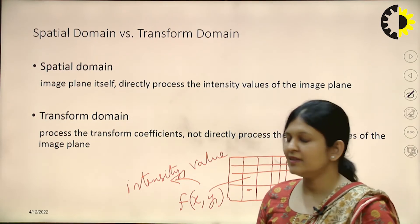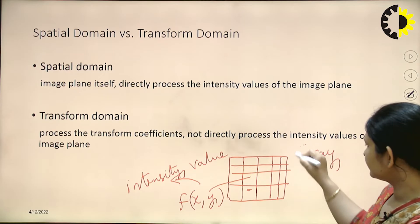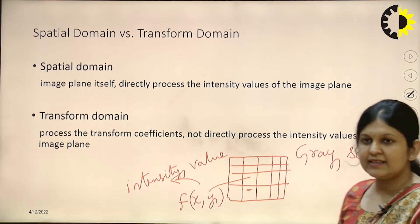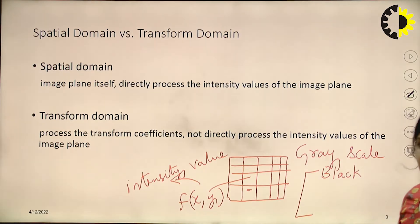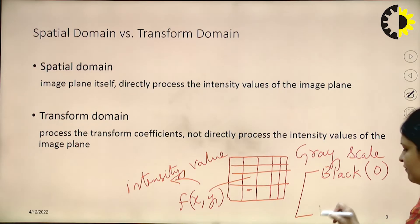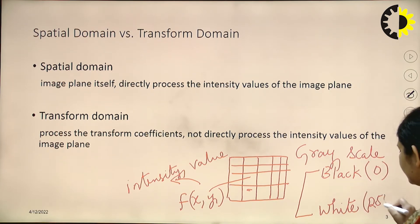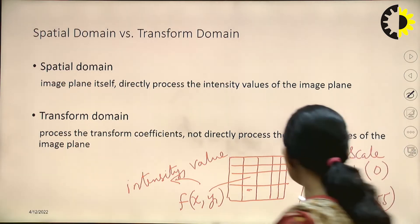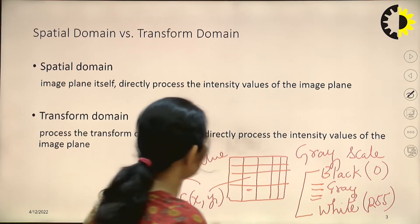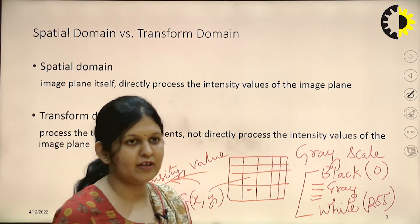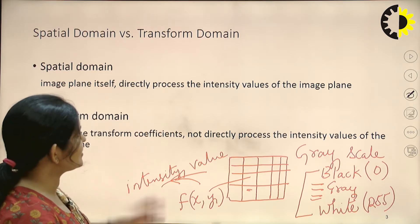Let's recall what is an intensity value. We work mostly in grayscale. Grayscale takes colors from black, which is given the lowest intensity value of 0, to white, which is 255. Between black and white we have various shades of gray. These intensities can be any value from 0 to 255. When we do transformations on the image in this domain, we are working on the intensity values of the image plane.